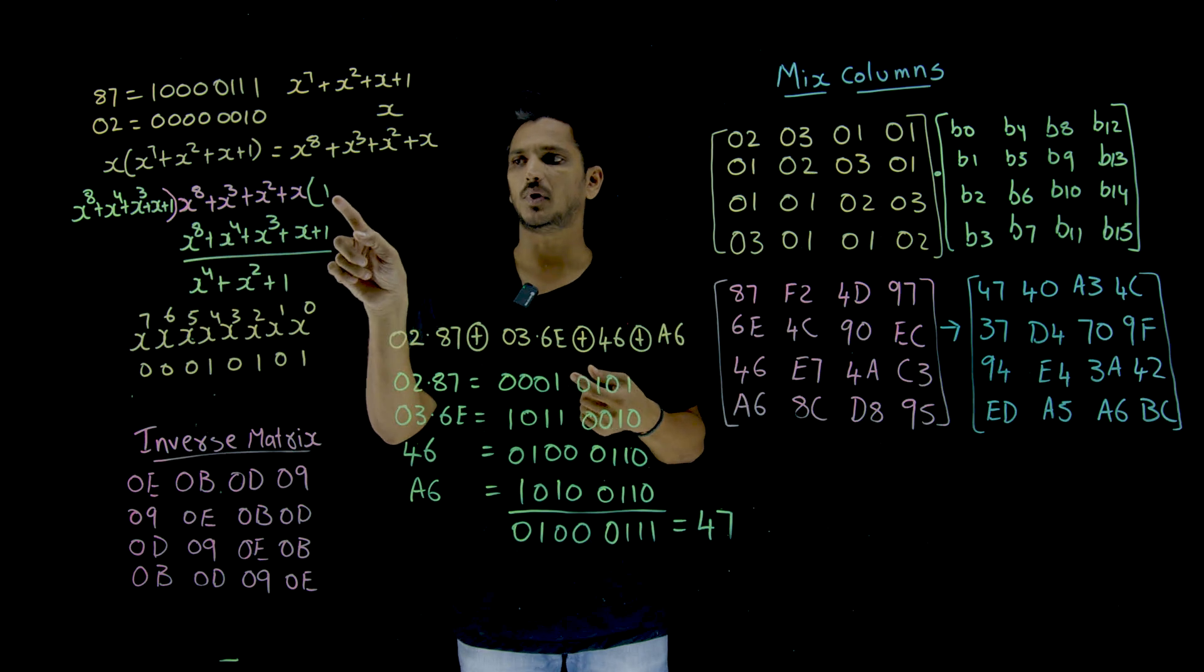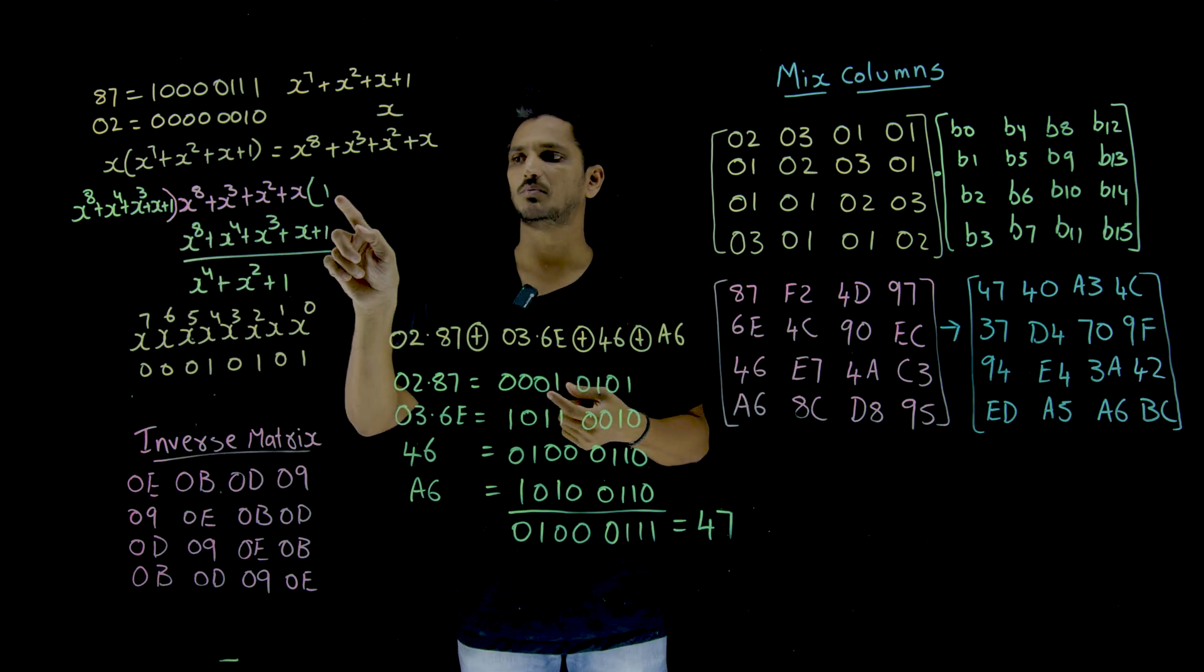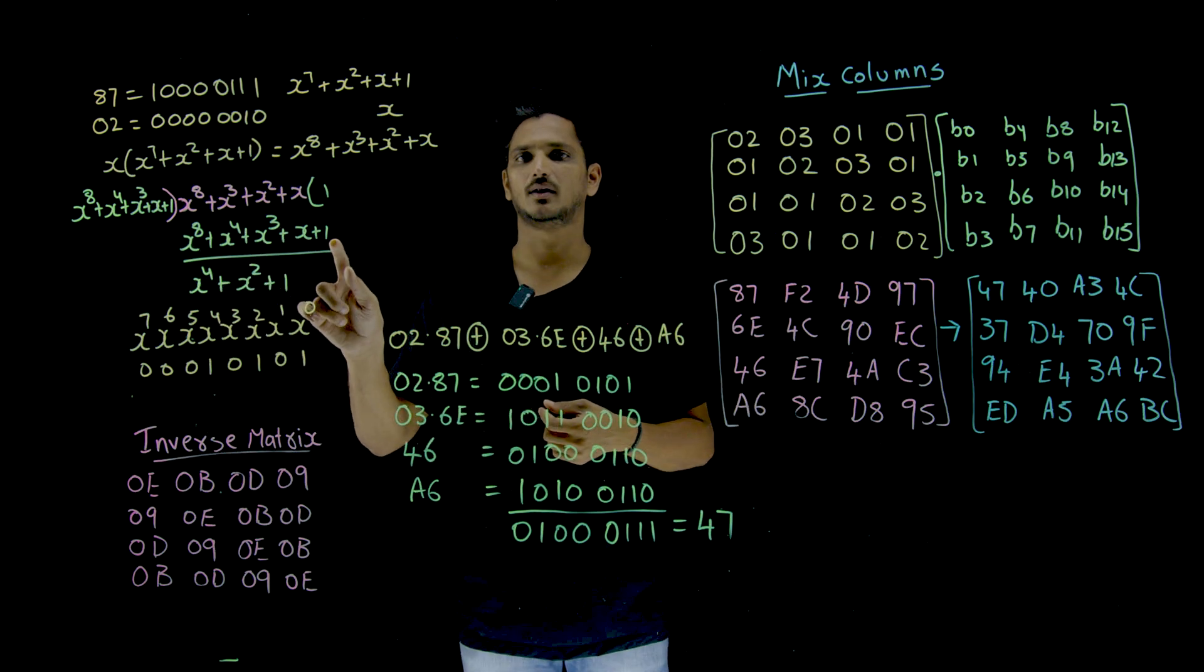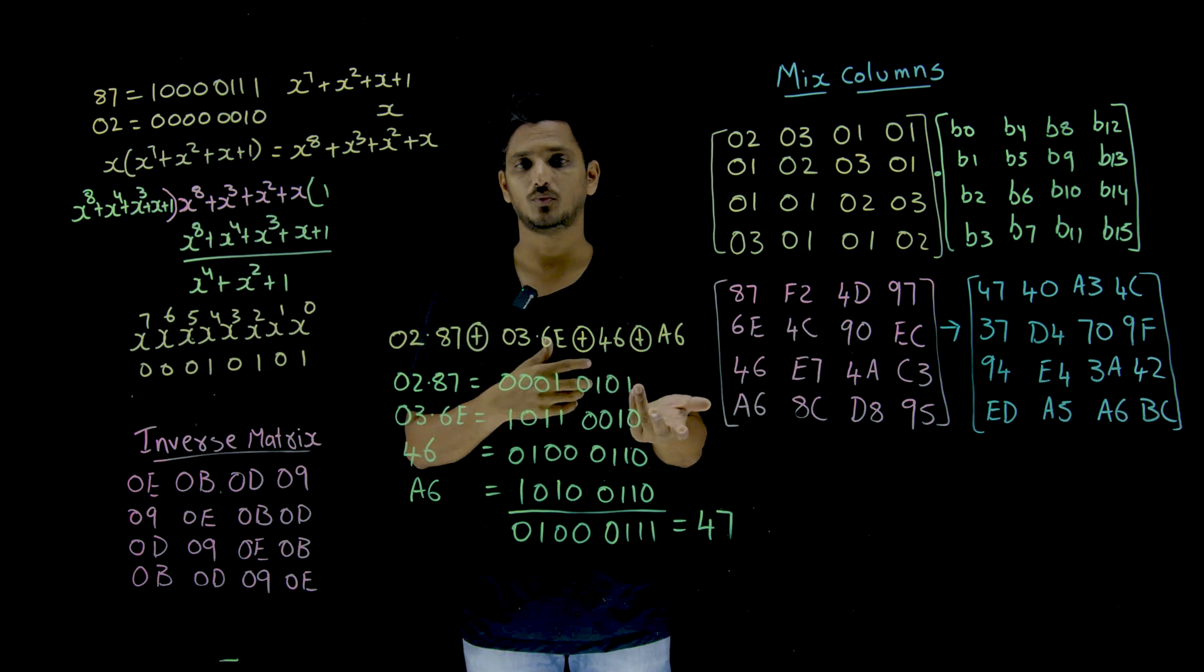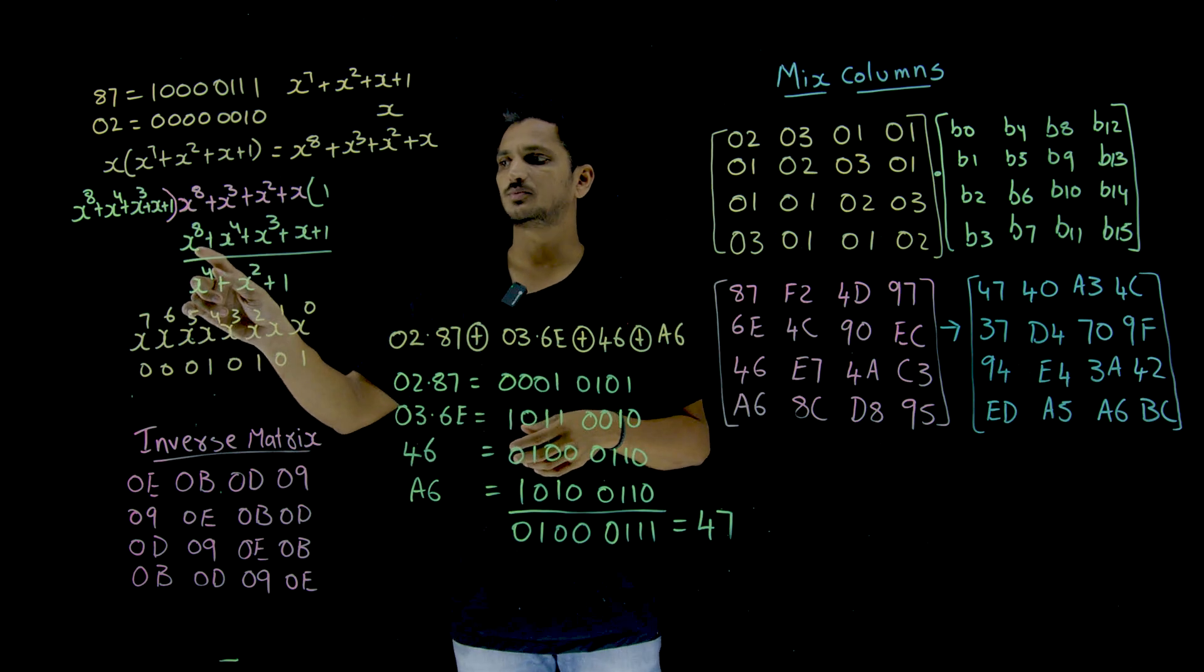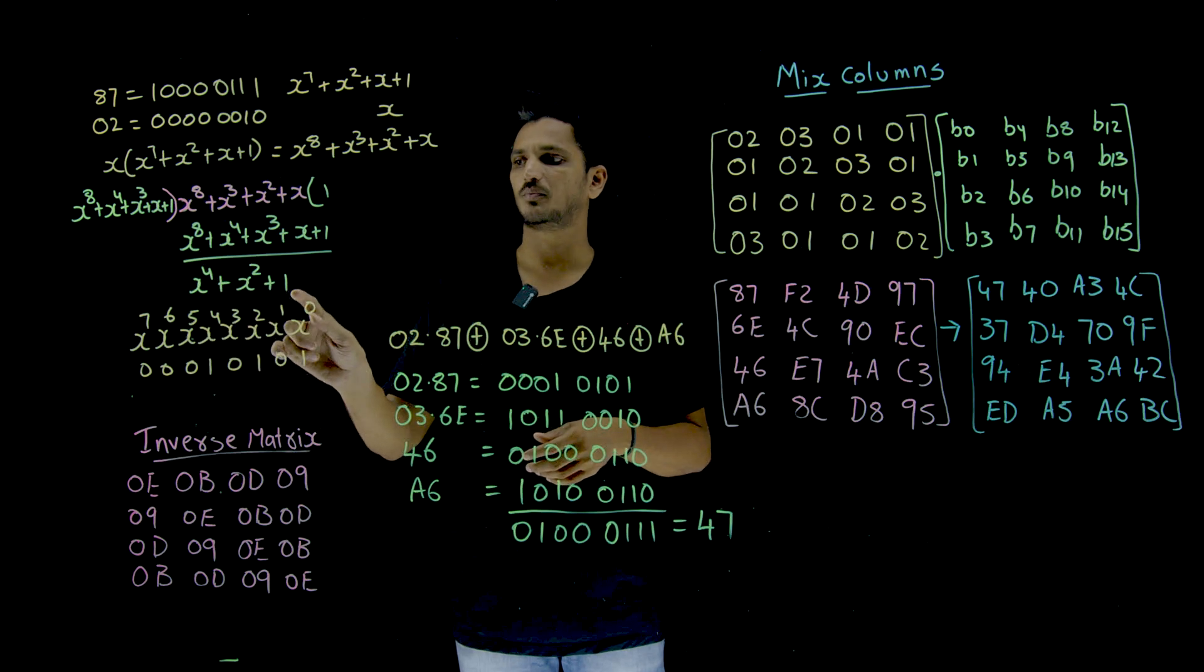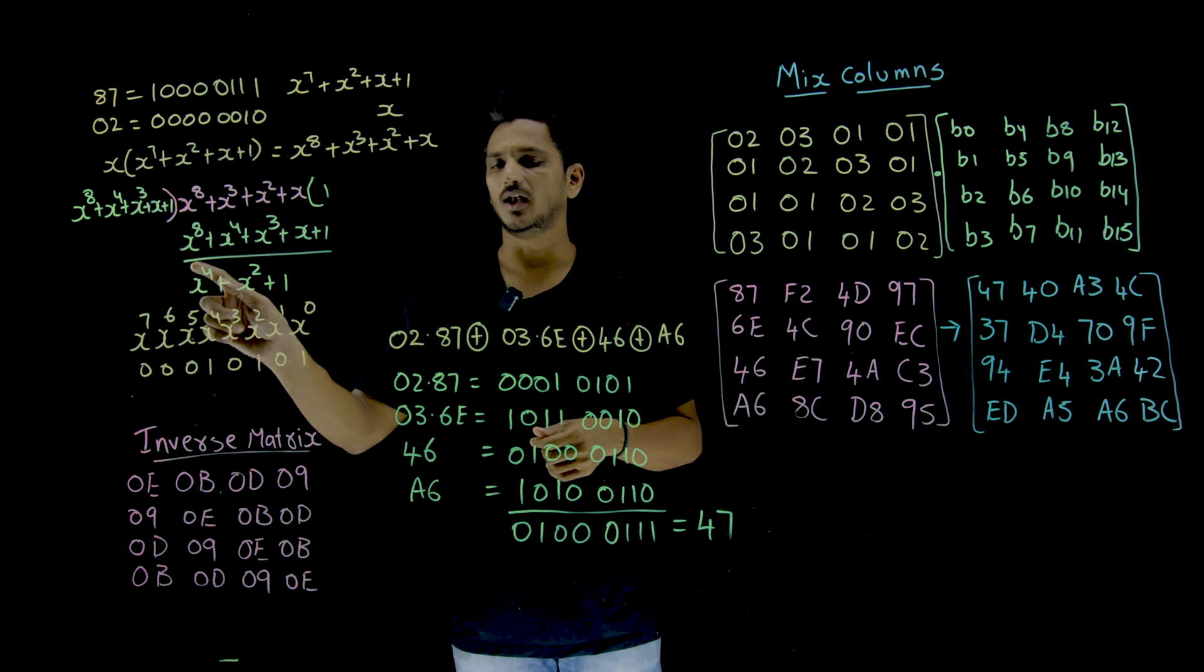This entire thing should be multiplied by 1. You are going to get this. So, X power 8 plus X power 4 plus X cube plus 1. So, do minus. Minus means here, GF of 2 minus means XOR operation. So, X power 8, X power 8, cancel. X cube, X cube, cancel. So, remaining thing is X power 4 plus X square plus 1. X, X cancel. This is the remainder value.